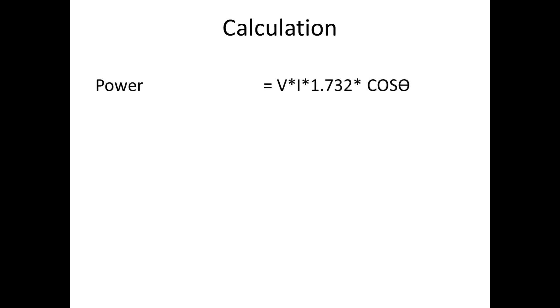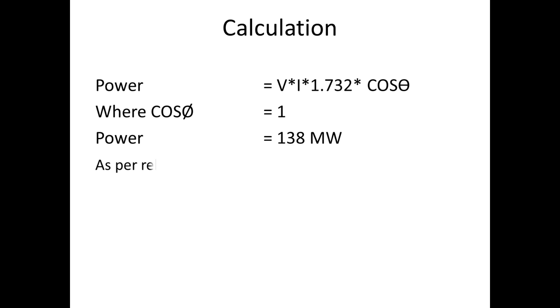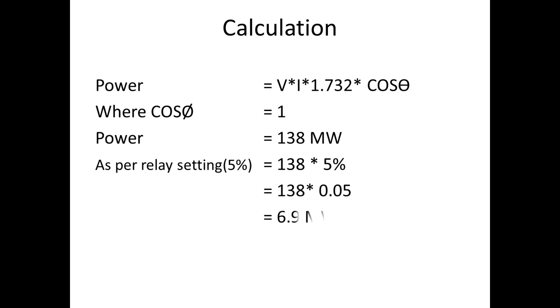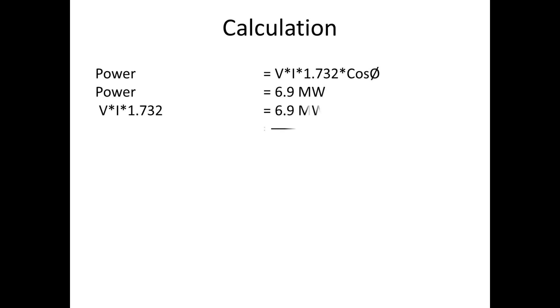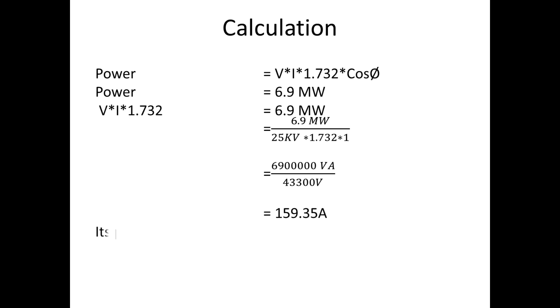Now we go for calculation. We all know the formula for power is V × I × 1.732 × cos θ, where the value of cos θ is 1. The generator power is 138 megawatt. As per relay settings it is 5 percentage, so we have to multiply 5 percentage with generator power — 5 percentage is 0.05 — and we get 6.9 megawatt. We have to equate this 6.9 megawatt into the power formula. As per low forward power, it mainly occurs with low current, so here we are going to keep voltage constant at 25 kV. In this formula, keeping current on one side and all remaining on the other side in the denominator, when I substitute all the values I got 159.35 amps.